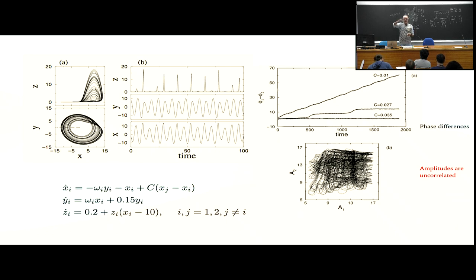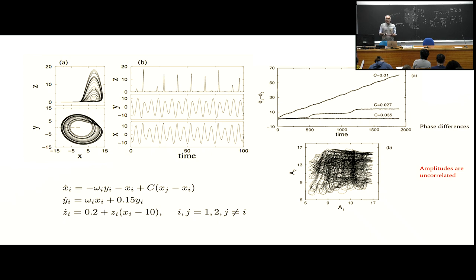As you increase the coupling, the phases now have long passages of being almost identical, but then you have what are called phase slips — the phase difference goes up in steps. As you finally increase C to some value, you find that the phase difference doesn't change — they have an identical phase as a function of time. The amplitudes themselves are highly uncorrelated, but the phase difference actually goes to zero. This is called phase synchrony.